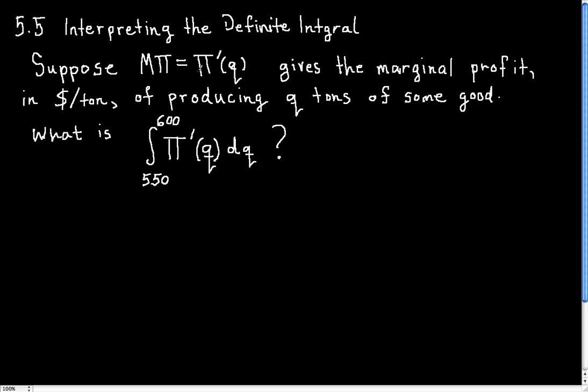We have some function π′, which is giving us the marginal profit in dollars per ton, and units are going to be important if we want to interpret this, of producing q tons of some good or commodity.